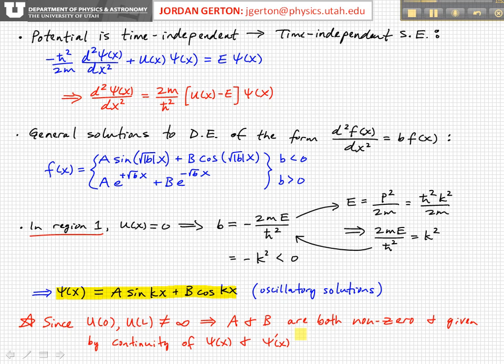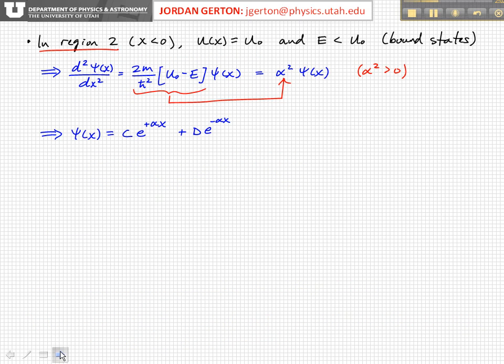Then we're going to have to use the continuity of the wave function and its derivative to find the constants A and B and any other constants which we're going to see arise. So in region 2, which we define to be to the left of the left wall, outside of the potential well where X less than zero, the potential equals U₀ there. We're considering the bound state solutions where the energy of the particle is less than the potential height.